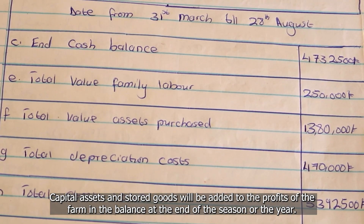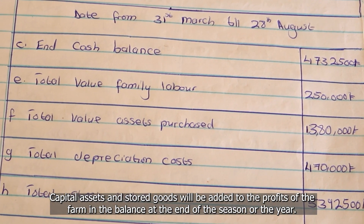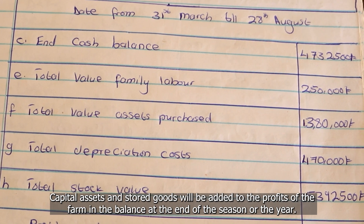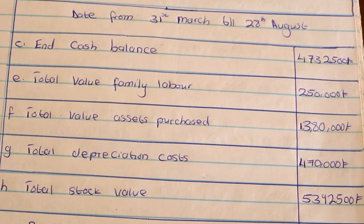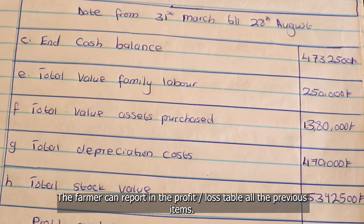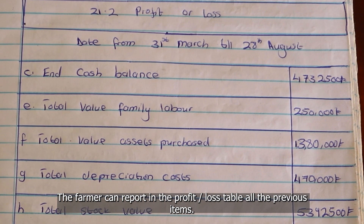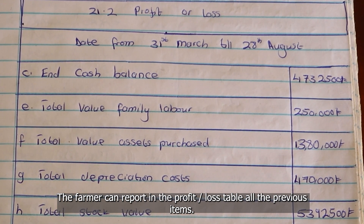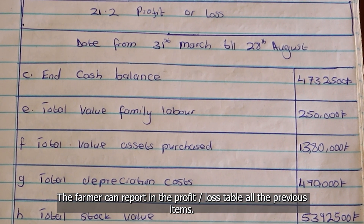Capital assets and stored goods will be added to the profits of the farm in the balance at the end of the season or the year. The farmer can report all these previous items in the profit or loss table.